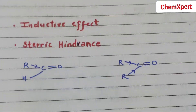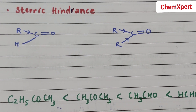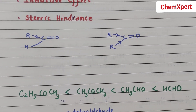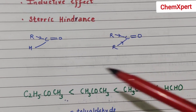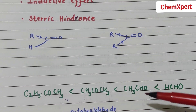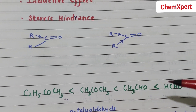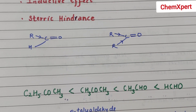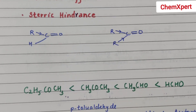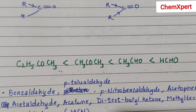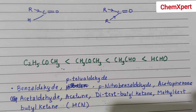Arranging these in increasing order of reactivity: ethyl methyl ketone is the least reactive, then propanone, then ethanal, and the most reactive is methanal. The same question can be framed in two different ways in the CBSE exam.